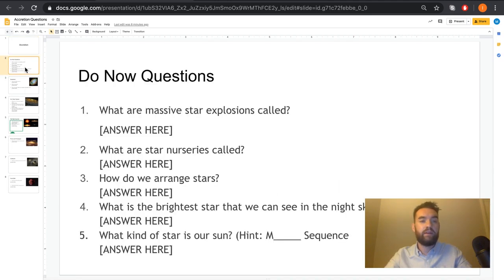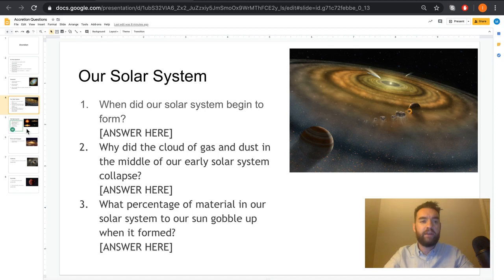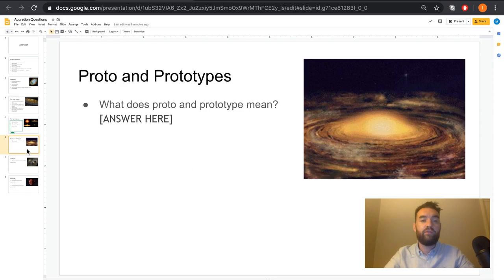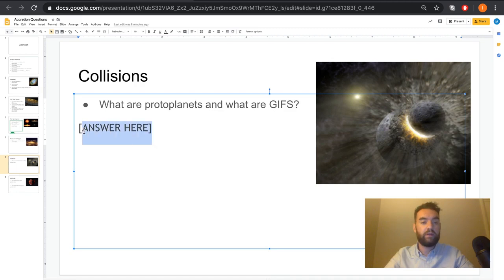As ever, we have our Do Now questions. We will have Do Now questions on the Google Slides. Where it says answer here, you can click with your mouse and you can put your answer here. If you want to be really clever, if you go to text colour here at the top and make it red, then that's your answer. And that automatically uploads to Google Classroom.